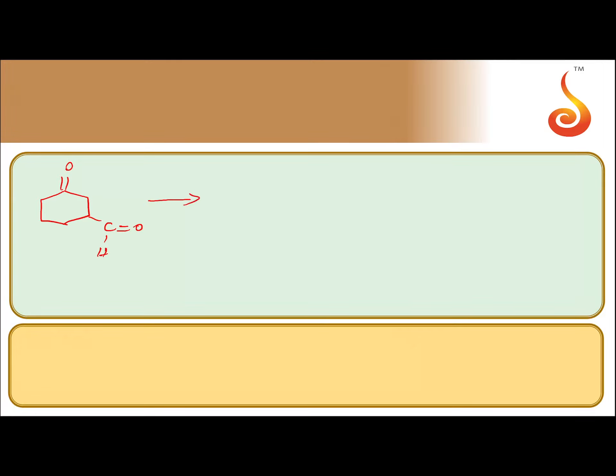Now let us see how this reaction takes place. When you treat this compound with ethylene glycol, aldehyde is more reactive than ketone, so aldehyde forms a cyclic ketal or cyclic acetal.